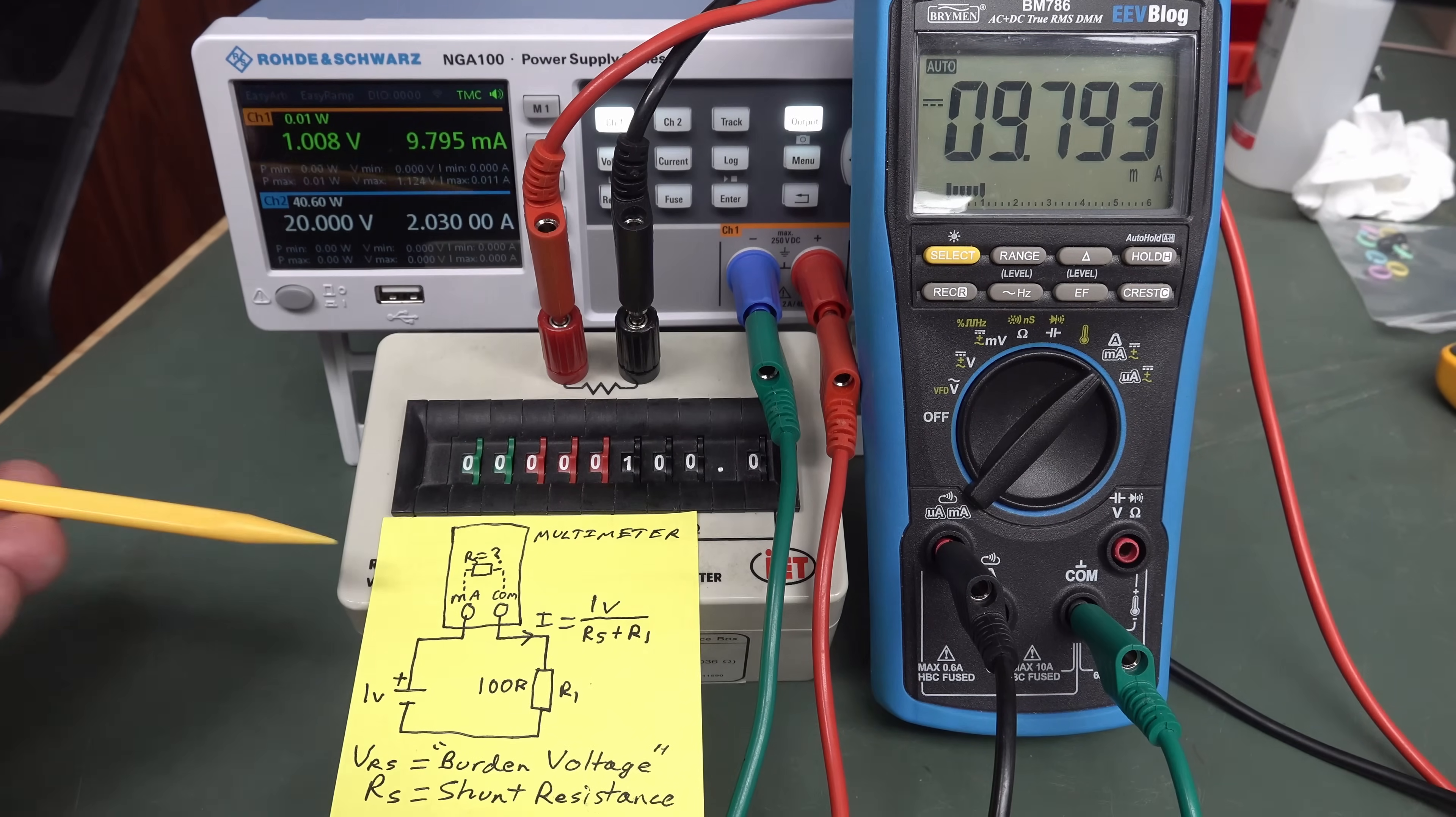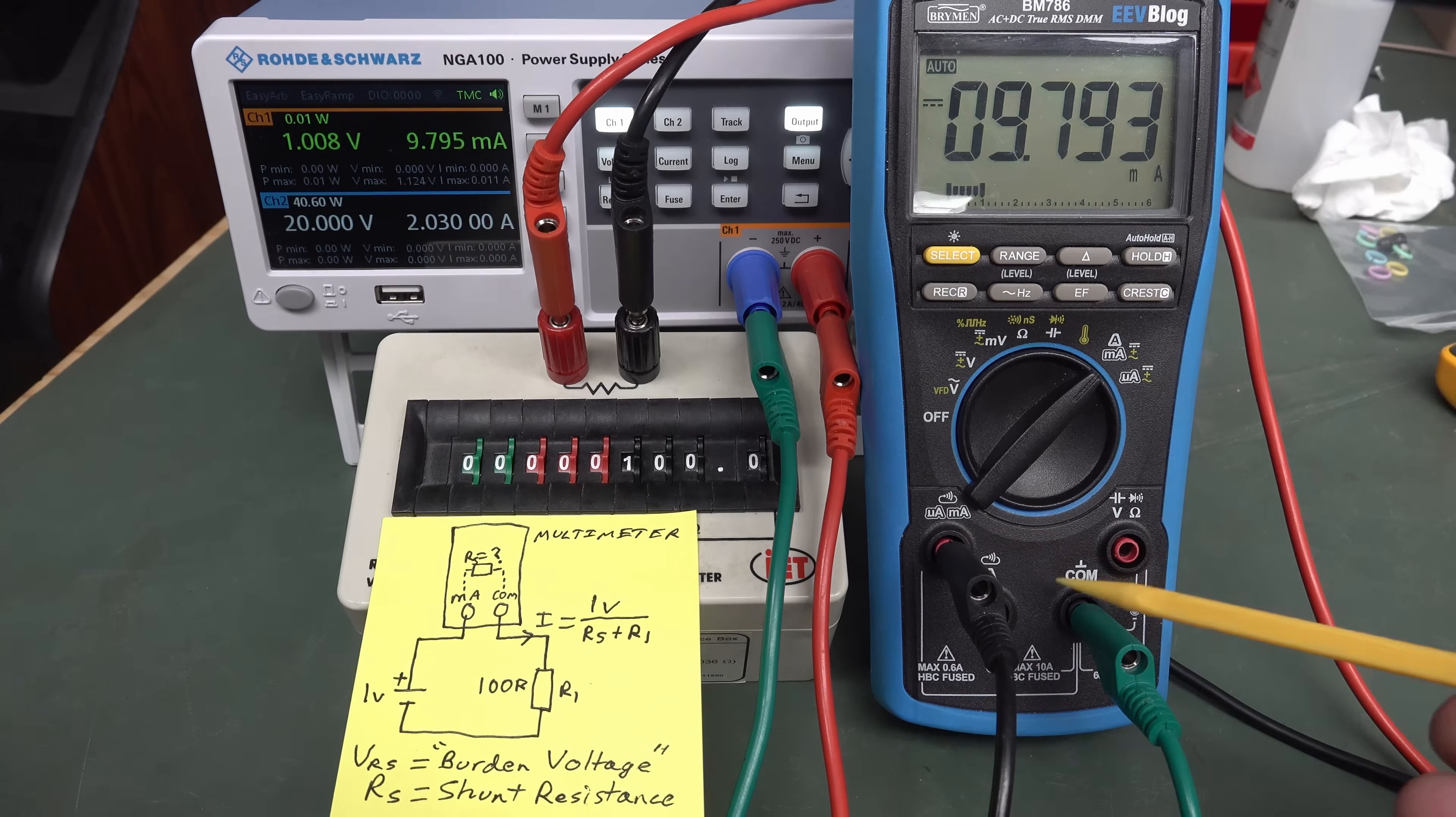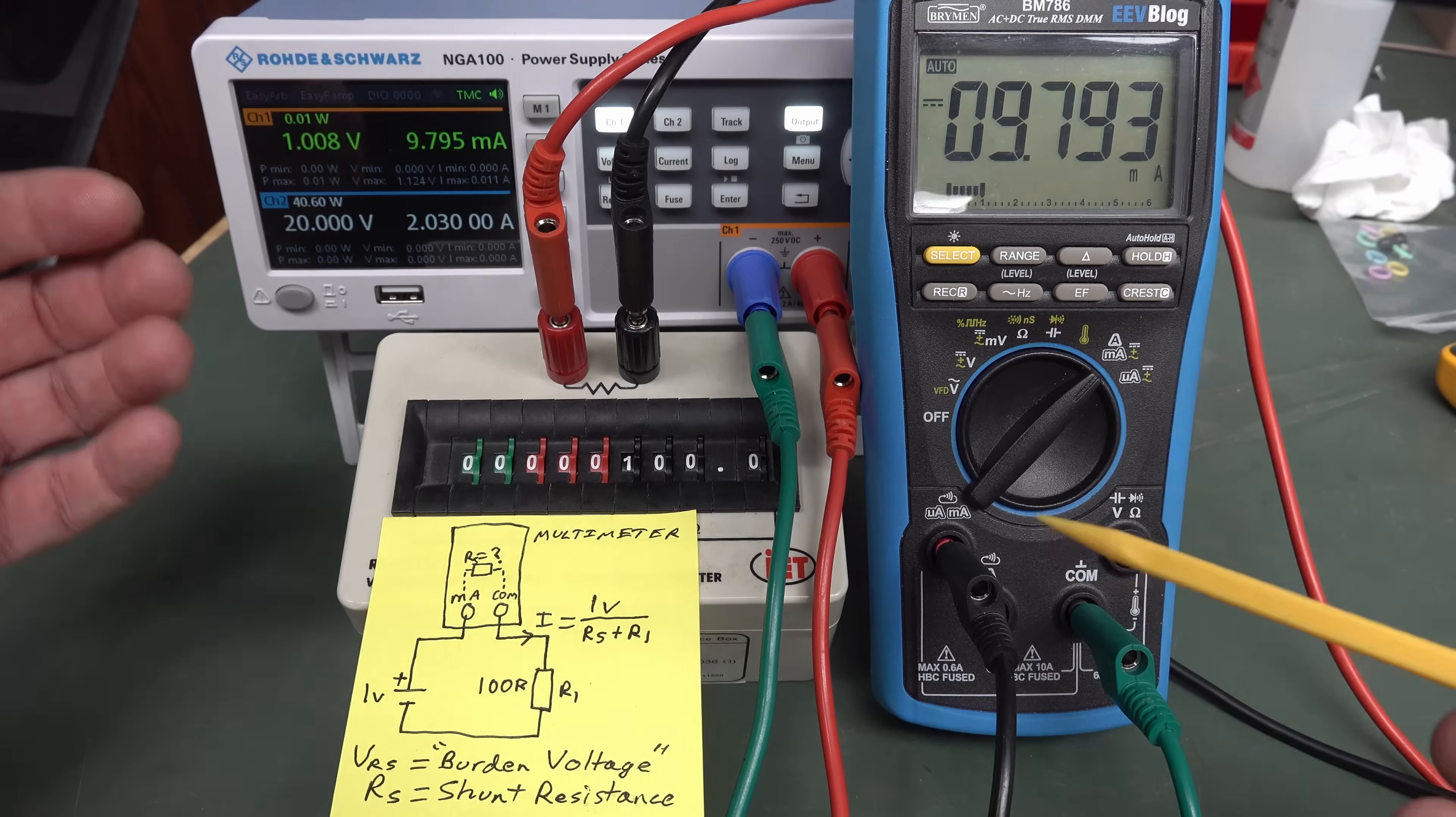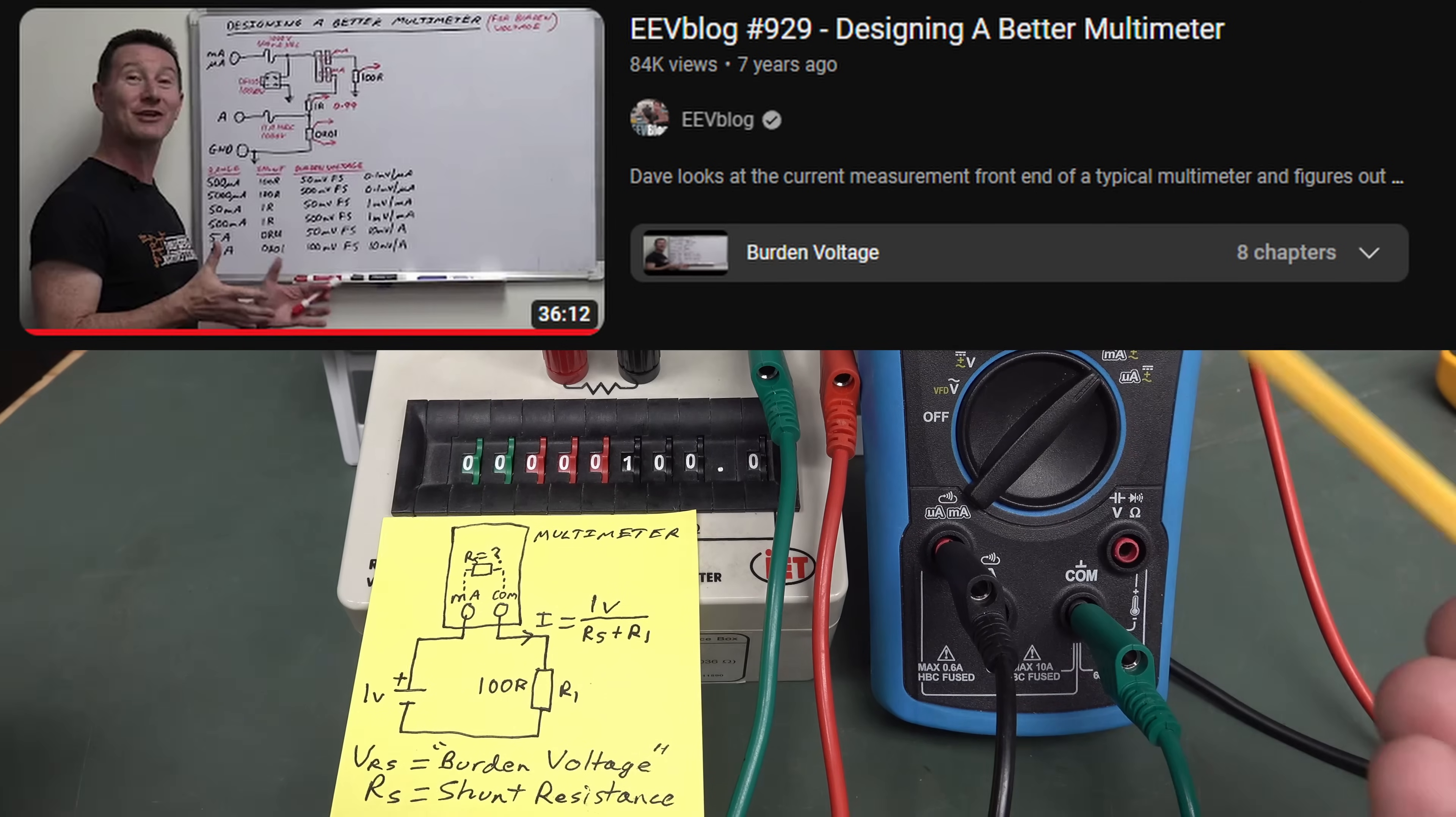What's going on? Well, this is what we call burden voltage in a multimeter. Basically what's happening here is every multimeter is going to have some resistance between the current jacks. This is made up of not only the value of the internal fuse, which has a resistance, but also the current shunt resistor, which is dropping the voltage which is used by the multimeter to actually measure the current.